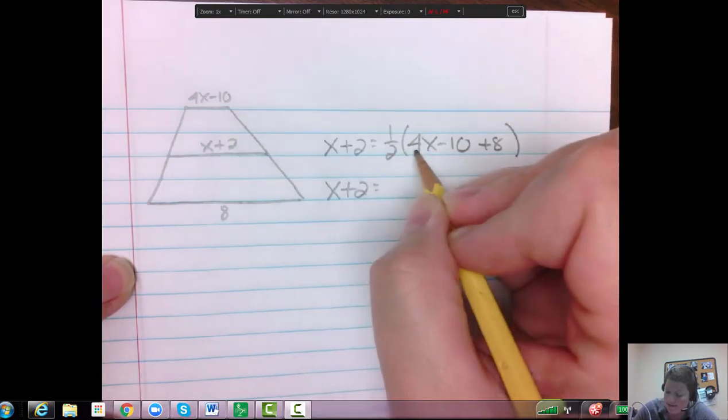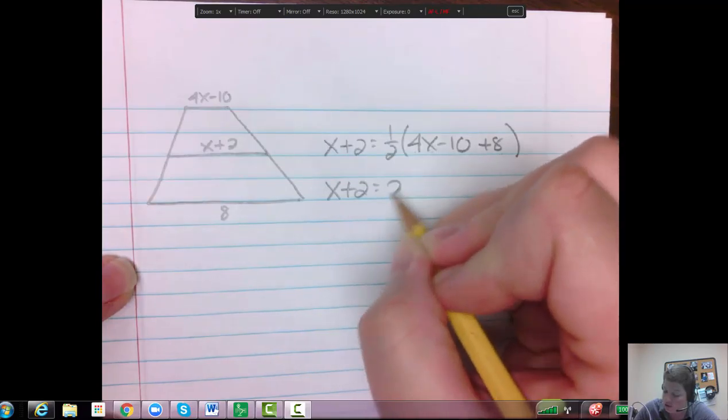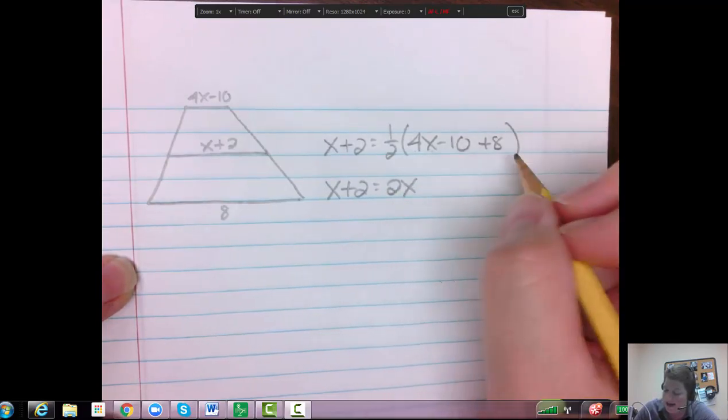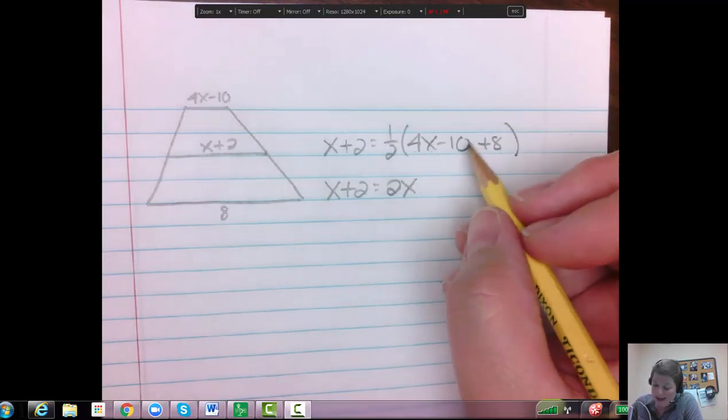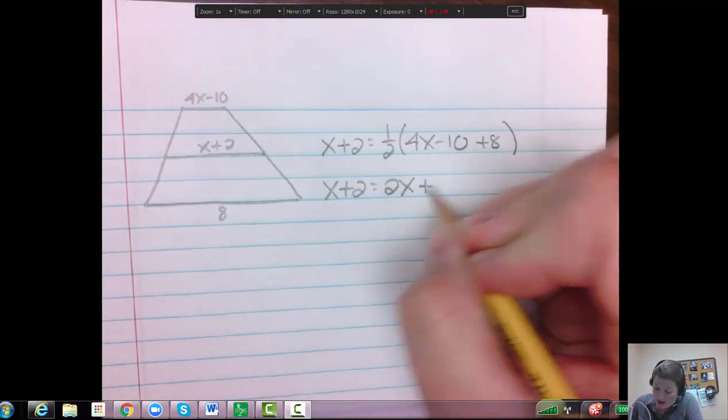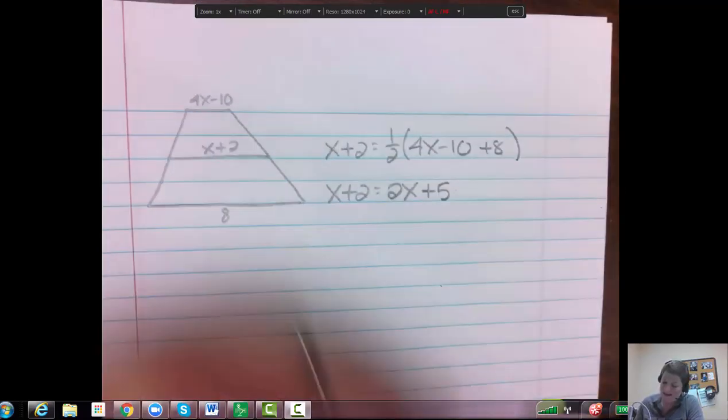One half times 4x is one half of 4, so you get 2x. And we can do this two ways probably. We can do half of 10 is 5, half of 8 is 4. Oops, that's a minus 5, sorry.